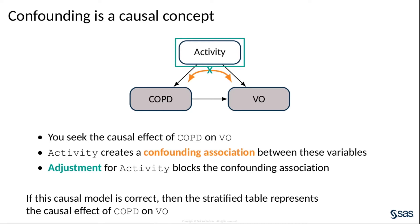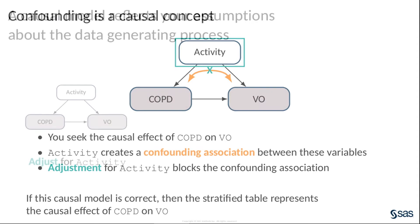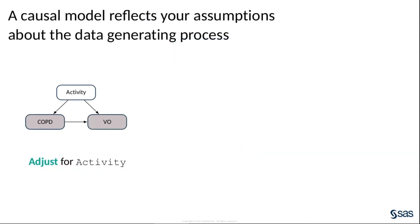Notice that this discussion is based entirely on the causal assumptions as represented in the DAG. This is important because different causal assumptions lead to different analyses. Here is the causal model that you just analyzed, where activity creates confounding association between the treatment and outcome of interest. However, this is not the only possible causal model.